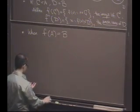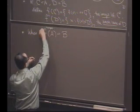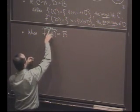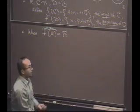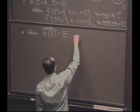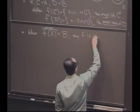The range is F of A, so this is the range. It's the image of everything in A. When the range is all the codomain, then we say that F is onto. It's an onto function.